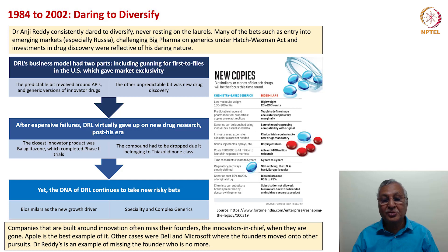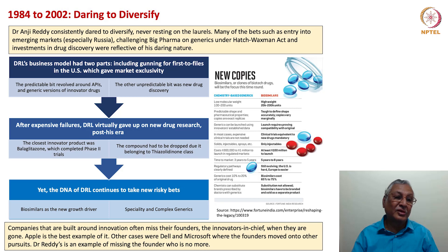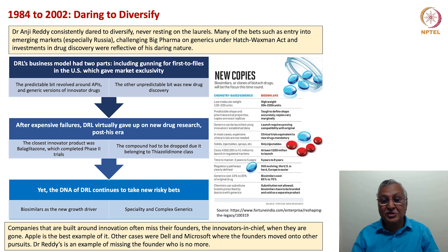Biosimilars became the new growth driver, along with specialty and complex generics. The TZD class in which DRL specialized was not actually a bad class at all — there was some initial concern about the cardiac impact, but today TZD drugs are also understood to have certain beneficial impacts in terms of broader metabolic diseases including NASH (non-alcoholic fatty liver syndrome). When drug discovery was faced down, something else started getting developed — new copies of innovative biopharmaceuticals. These were not exact copies as generic formulations were; they were similar but not exactly the same.